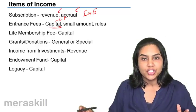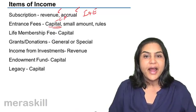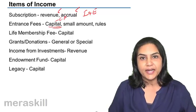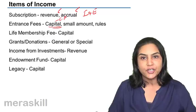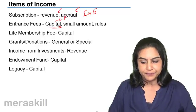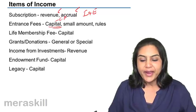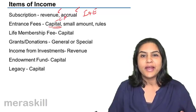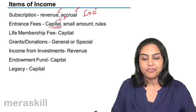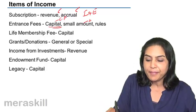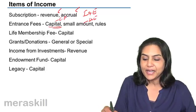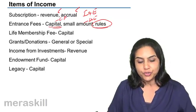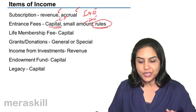The logic for treating entrance fees as capital is that it is paid only once by a member, and therefore such an amount should not be treated as a revenue item. It should be taken as a capital item and added to the capital fund or general fund. However, if the entrance fees amounts are small and regularly received, they could be taken to the income and expenditure account. Ultimately, it depends on the rules of the particular non-profit organization.